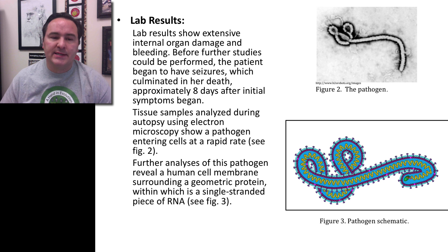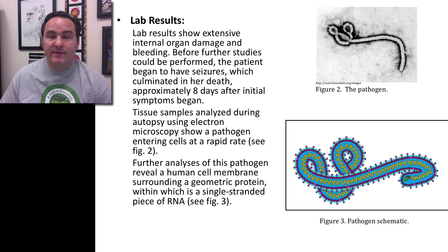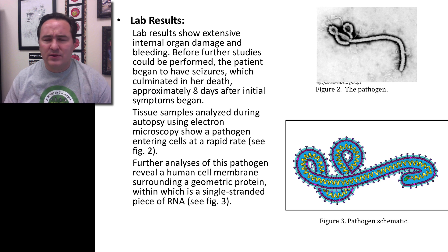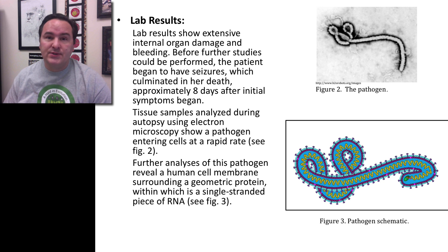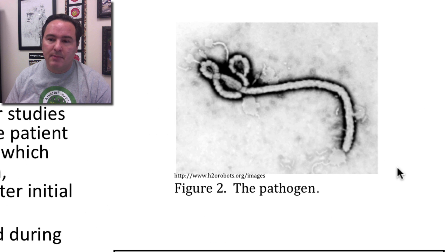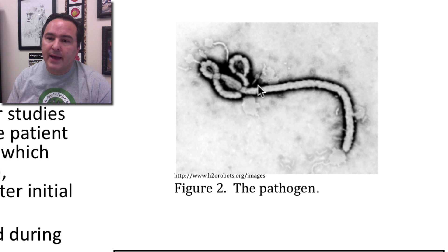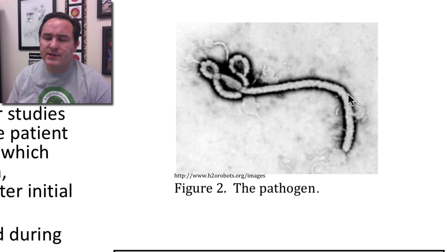The lab results showed extensive internal organ damage and bleeding, and before they could continue with any more studies, the patient began to have seizures and eventually died — about eight days after the initial symptoms began. Tissue samples were analyzed during the autopsy and an electron micrograph picture of a pathogen was found. This pathogen had a long structure that wound around itself, and when they looked closer, the membrane on the outside seemed to have many characteristics of a human cellular membrane.